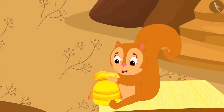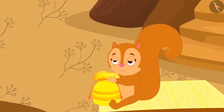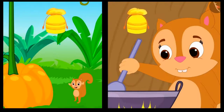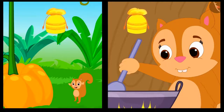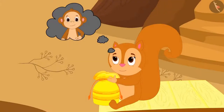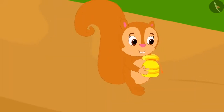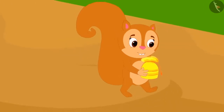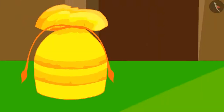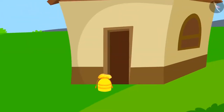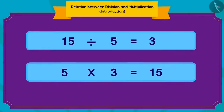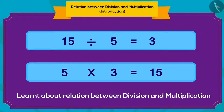Just when Chanda was about to open the third pouch, she remembered the happiness she had felt after opening the first two. She thought, why not give this pouch to her friend Babban and make him happy? Thinking this, Chanda quietly left the pouch outside Babban's door. In this video, we learned about the relation between division and multiplication. In the next video, we will bring some interesting examples related to this.